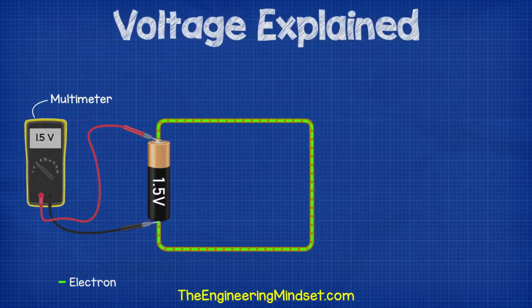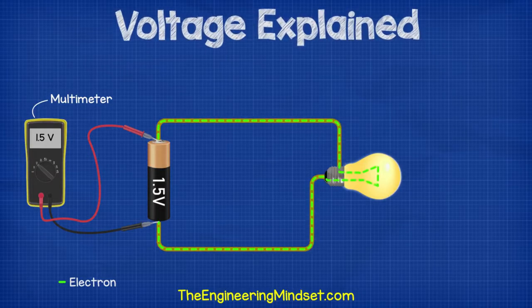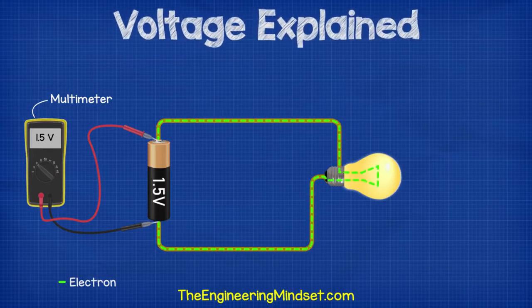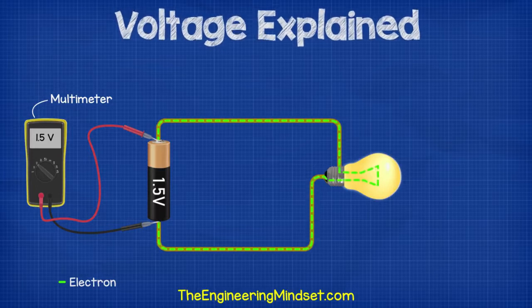We can place electrical components in the path of these electrons to do work for us. For example, if we now place a lamp into the circuit, this will light up as the electrons flow through it.